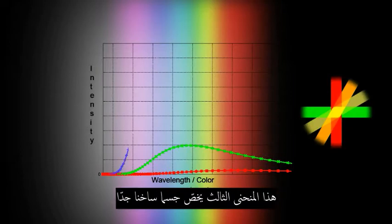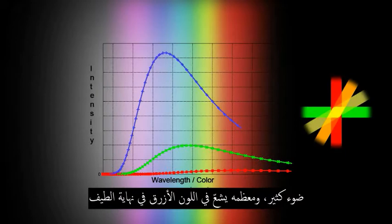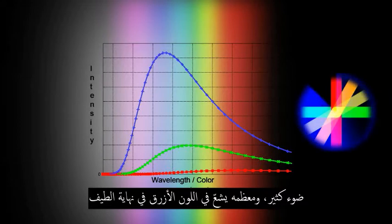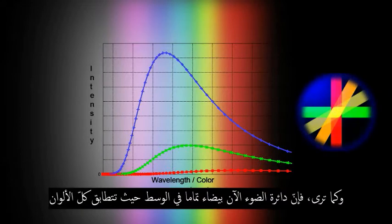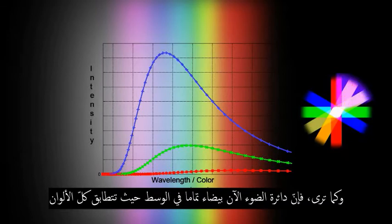This third curve is for a really hot object. Lots of light, and with most of it being emitted toward the blue end of the spectrum. And as you can see, our cauldron now is pure white in the center where all the colors overlap.